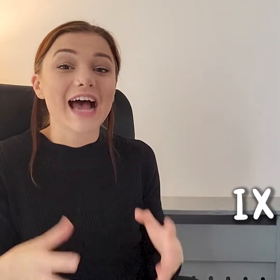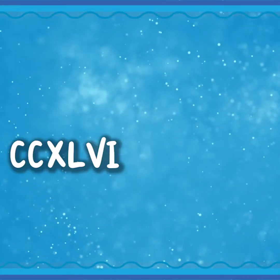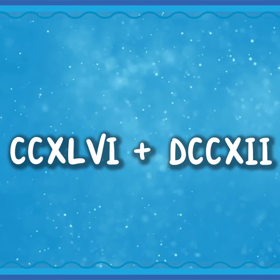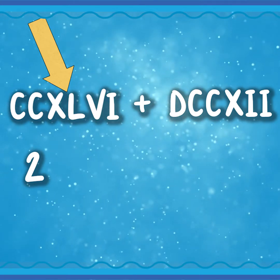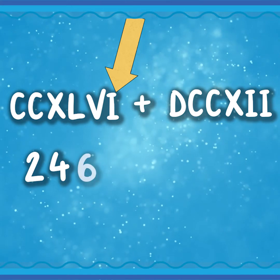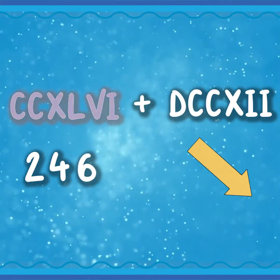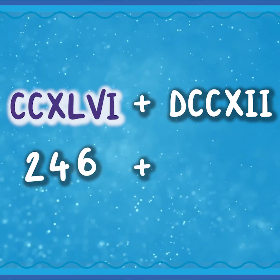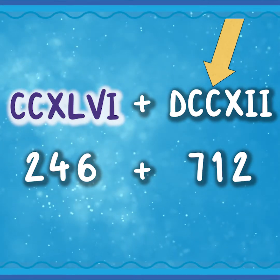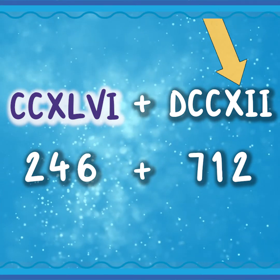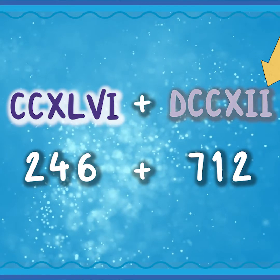Now let's try adding Roman numerals. To add Roman numerals, all you need to do is work out the Roman numerals as a number, add those numbers together, and then work out your answer in Roman numerals. For example, let's add CCXLVI and DCCXII. CCXLVI has 200, followed by XL which is 50 take away 10, which is 40, and VI which is 5 add 1, which is 6 — so CCXLVI is 246. DCCXII is 712, because DCC is 500 add 200 which makes 700, and XII is 10 add 2, which is 12.